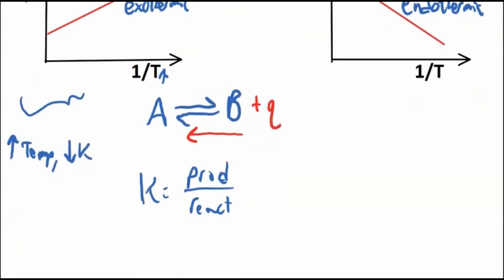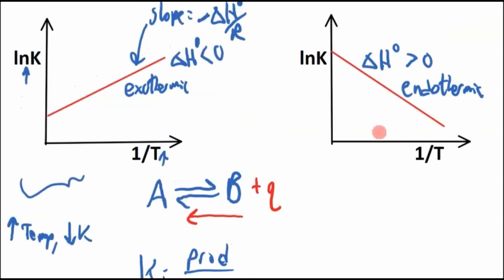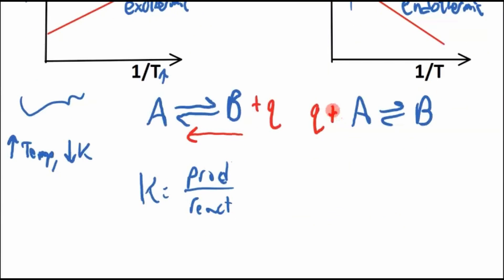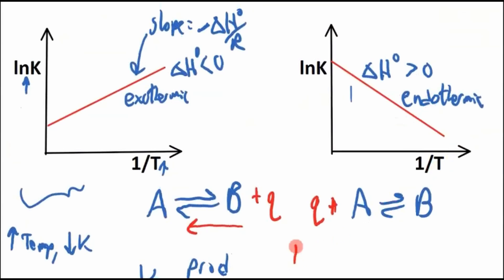And vice versa, if this is an endothermic reaction. If A is in equilibrium with B, an endothermic reaction, we have energy being absorbed as heat on the product side. That means if we increase the temperature, this gets smaller, so we're going to go in this direction if we increase the temperature.